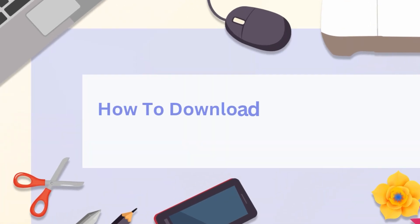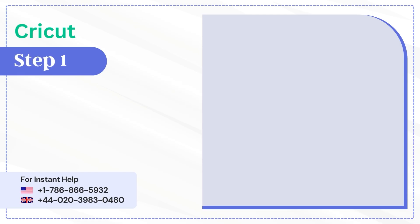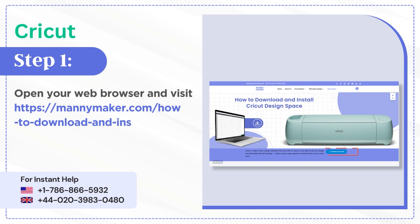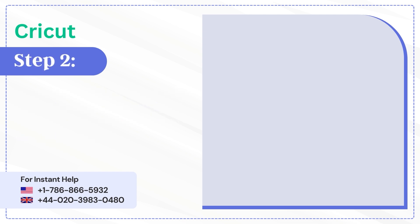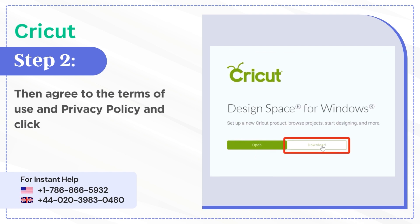How to download and install Cricut Design Space. Step 1: Open your web browser and visit the Cricut website. Step 2: Agree to the terms of use and privacy policy and click on Download.